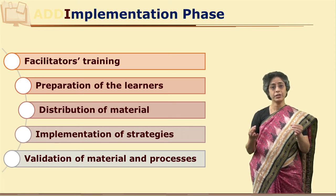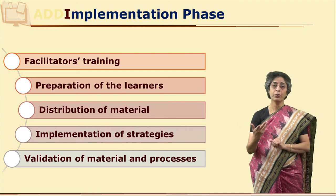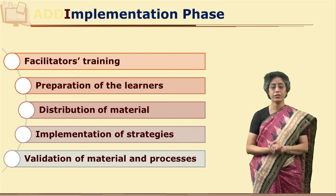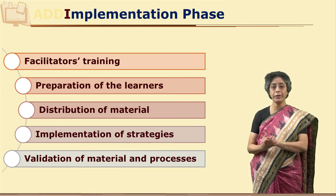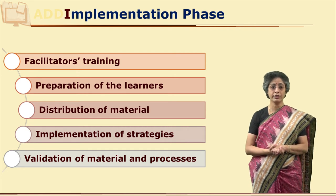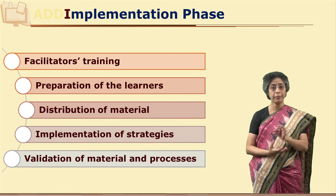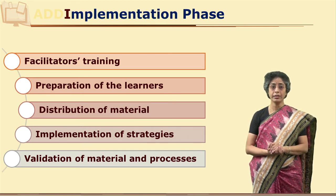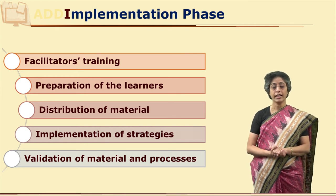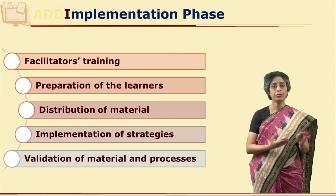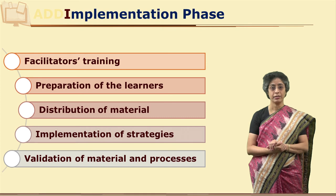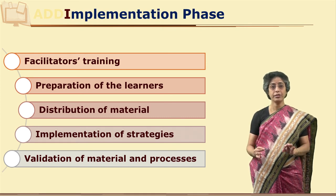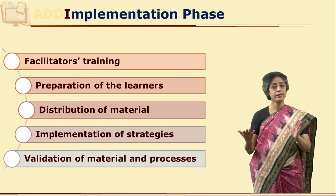Distribution of this material to the entire target group is a challenge, and a proper systematic distribution policy needs to be implemented. Even after distribution of material, the entire learning needs to go very systematically, and that is why some instructional strategies need to be implemented. When will the e-tutor interact online? What kind of discussion forums will be used? When will there be synchronous communication conferences? Everything needs to be planned and implemented accordingly. If you are not using electronic media, study centers need to organize counseling sessions, and all study centers need to be informed about the schedule and duration of these counseling sessions.